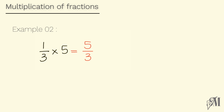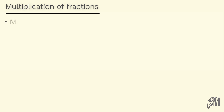In this case, 5 over 3 is an improper fraction. We never leave the final answer as an improper fraction, so we convert 5 over 3 into a mixed number. Therefore our final answer becomes 1 and 2 over 3.